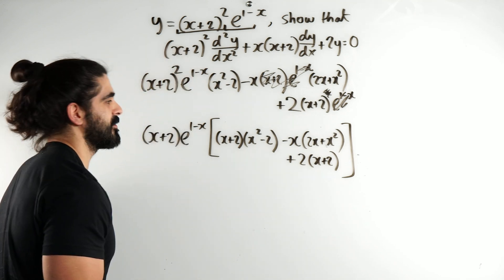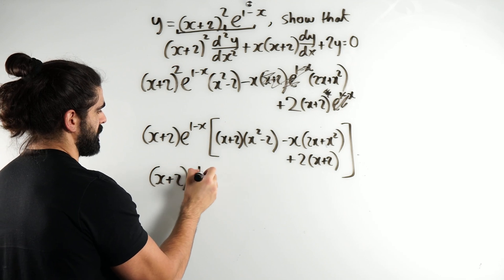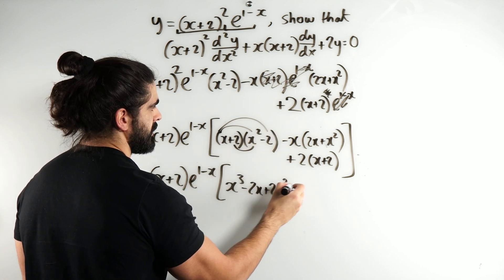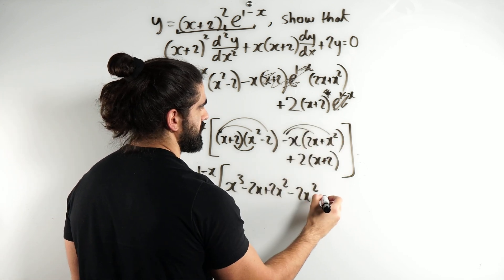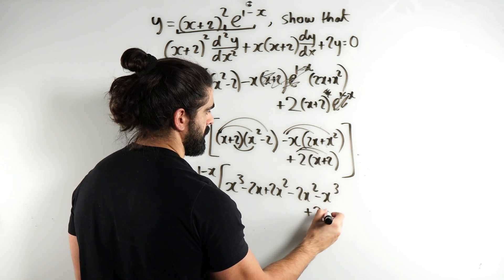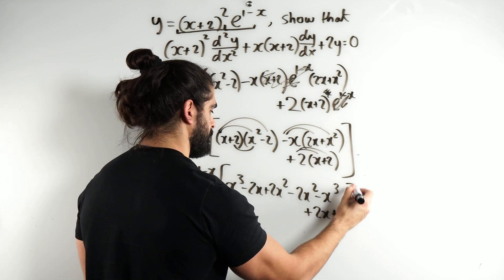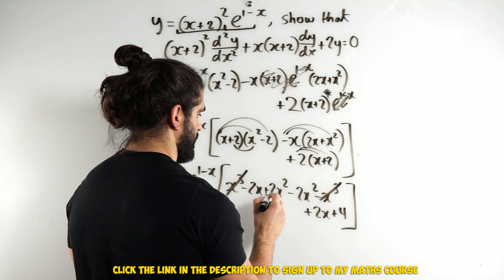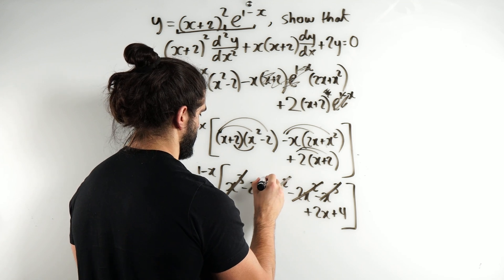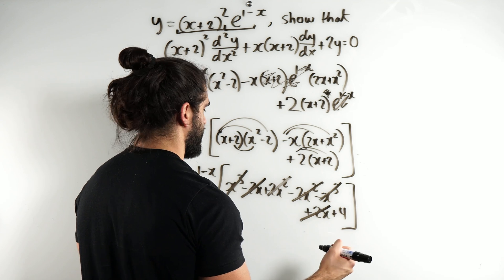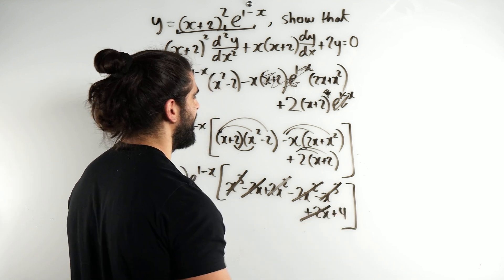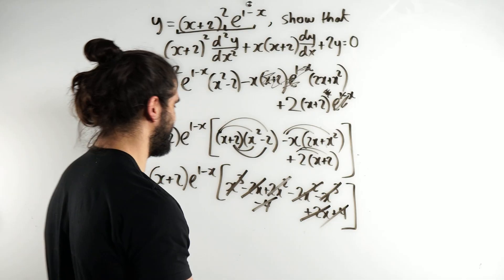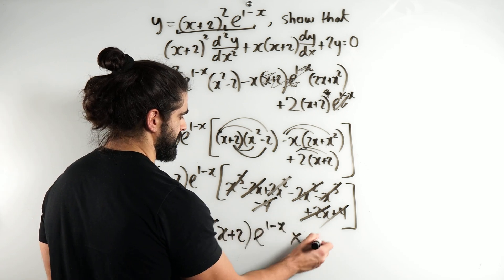Okay, so we have that. Now, we just need to expand all of that and see what happens. So, x plus 2 e to the 1 minus x, x cubed minus 2x plus 2x squared minus 2x squared minus x cubed plus 2x plus 4. x cubed minus x cubed, these go and this goes with the 2x, and we are left with 4. Why am I left with 4? Okay, I'm bugging. There's a minus 4 there. Nice. Wow, I'm starting to sweat out here. So, you get 0 times 0, which is 0.